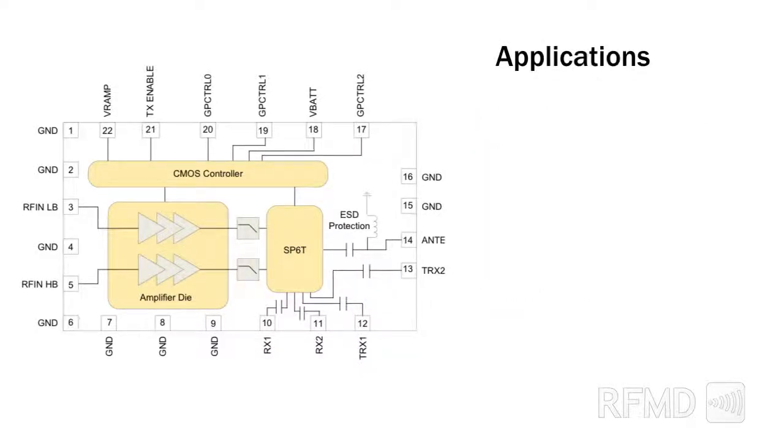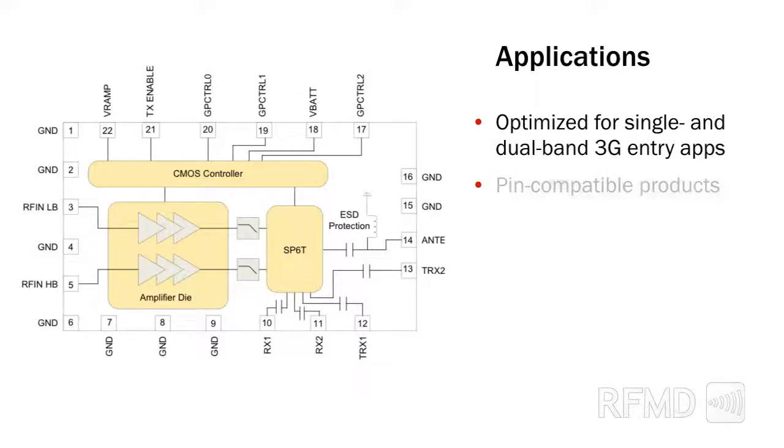Applications for the RF3230X family include optimization for single and dual band 3G entry applications including GSM, GPRS, and linear edge, with pin compatible products for scalability and platforming.